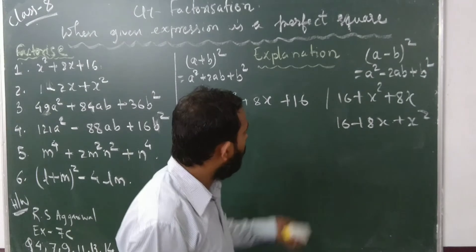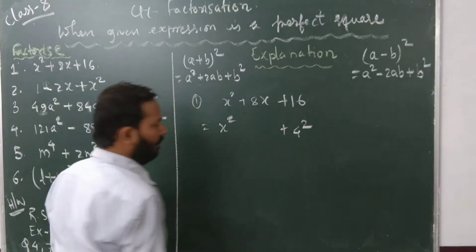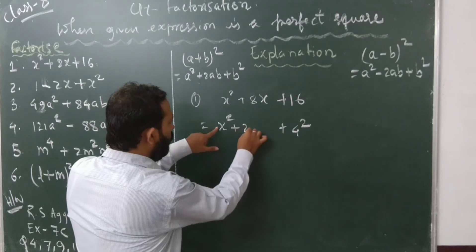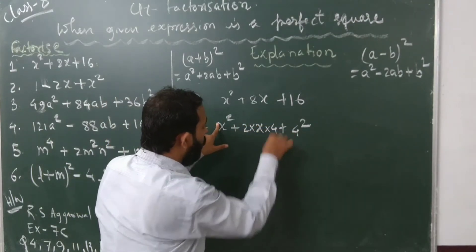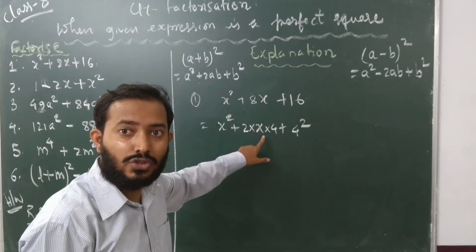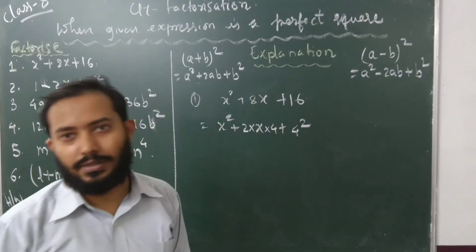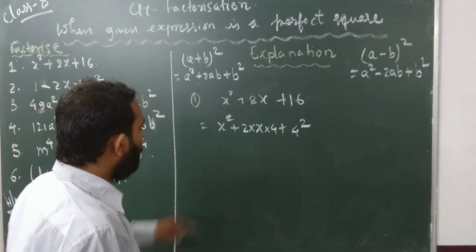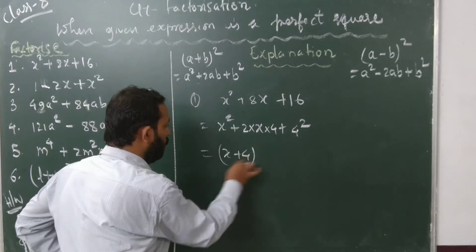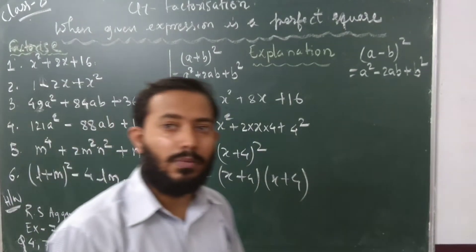Our target is to break the expression into a² + 2ab + b² form. We have a = x and b = 4. Checking the middle term: 2 × x × 4 = 8x — and yes, there is an 8x in the expression. So we can write x² + 8x + 16 as a² + 2ab + b², which equals (a+b)², that is (x+4)², or equivalently (x+4)(x+4).